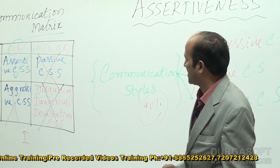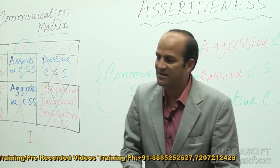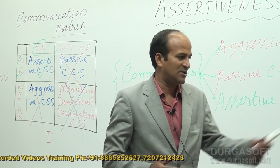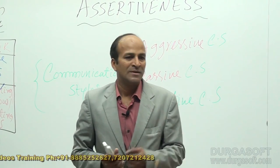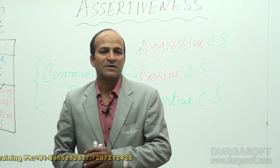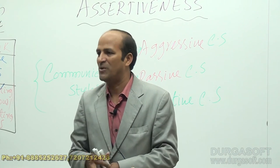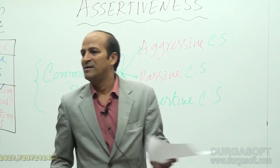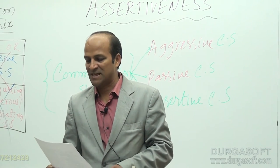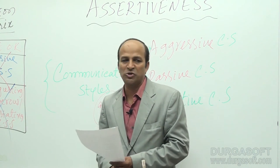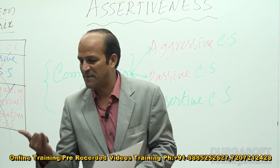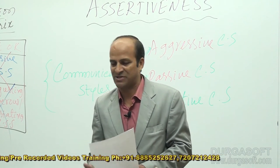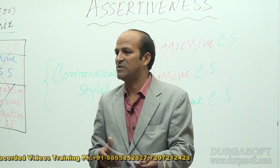We have four styles of communication. A questionnaire with 20 statements will help identify whether we fall under passive, aggressive, assertive, or the disgusting and dangerous communication style. The score pattern is: always scores 1, usually 2, sometimes 3, seldom 4, never 5.